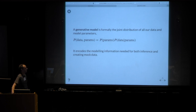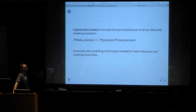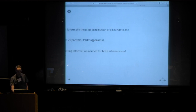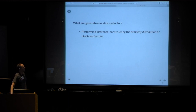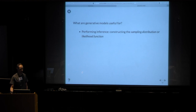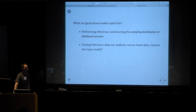Not too surprisingly, this is the probability of everything — it includes all the modeling information we need to do inference. Of course, the posterior is right there. It also contains all the information we would need if we wanted to create mock data according to whatever experiment we're doing. So it's useful for doing inference, since we need to know the prior and the likelihood.